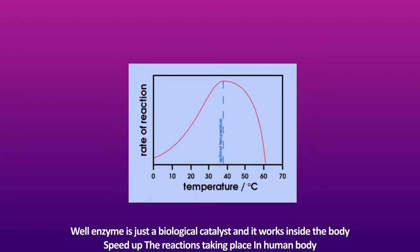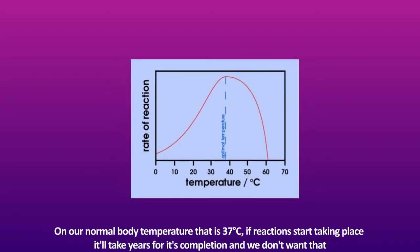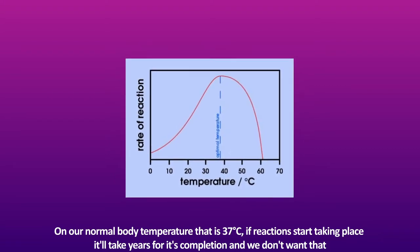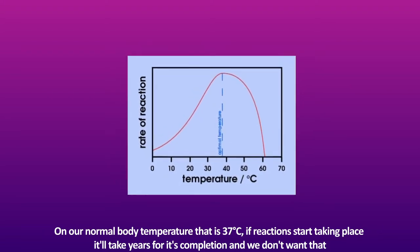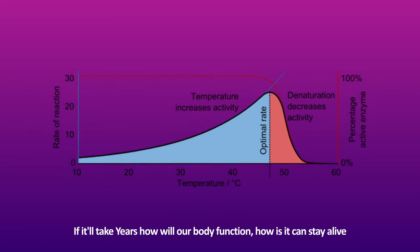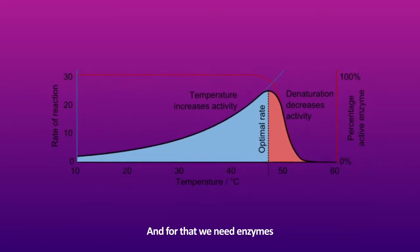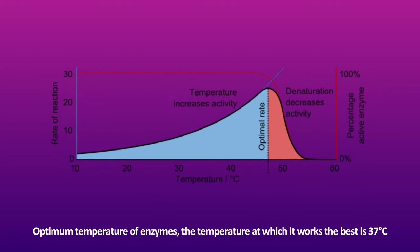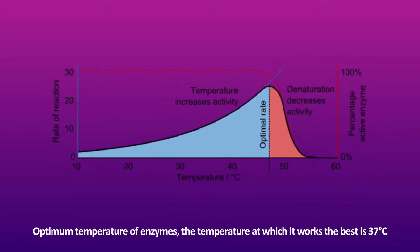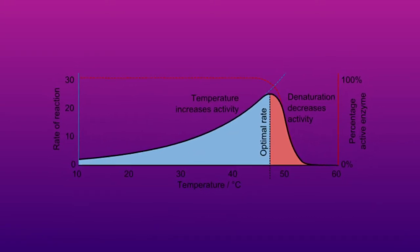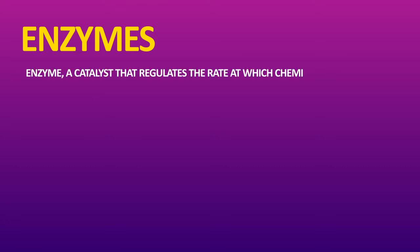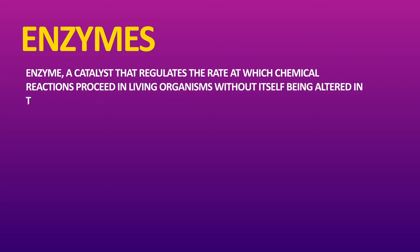Our body temperature is 37 degrees Celsius. Without enzymes, reactions would take years and we don't want that. For that, we need enzymes. Enzymes' optimum temperature — the temperature at which they work the best — is 37 degrees Celsius. So, enzymes are biological catalysts that speed up reactions in the living system without being used up in the process.